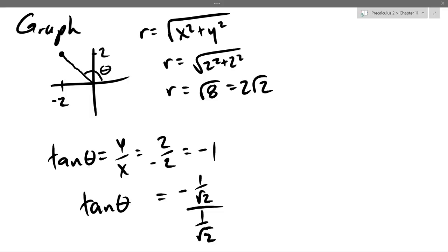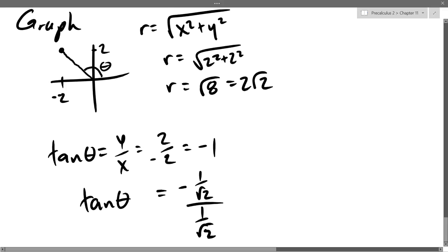Any questions on the graph or the radius? Those should be the two easier parts of this problem. We just go left two, up two. The radius is always √(x² + y²). I didn't bother writing negative two squared because I know it'll come out positive when squared, so I don't even write the negative sign when I know I'm squaring.